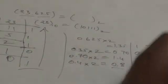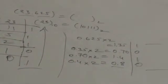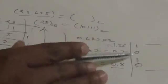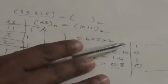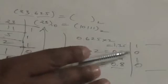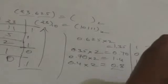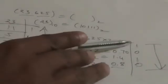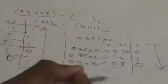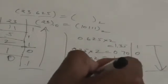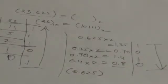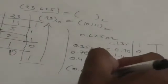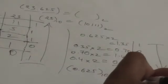The next step is to accumulate all the integers obtained in these steps from top to bottom. That is 1, 0, 1, 0. So when we convert 0.625 from decimal to binary, the result is 0.1010.